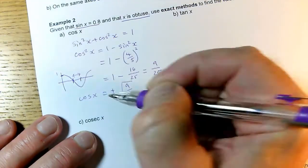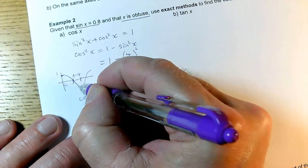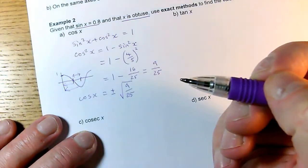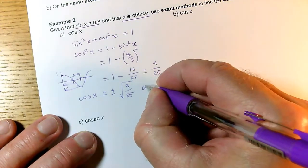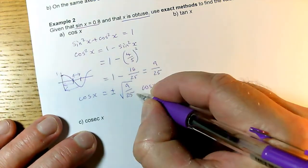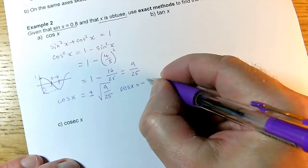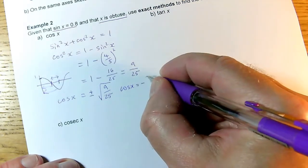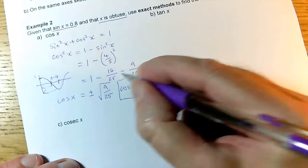Cos is the y-coordinate on the graph. So the y-coordinates of obtuse angles, their cosines, are always negative. Therefore, my cos x for this question is minus the square root of 9/25. So it's minus... square root of 9 is 3, square root of 25 is 5, so cos x is -3/5.